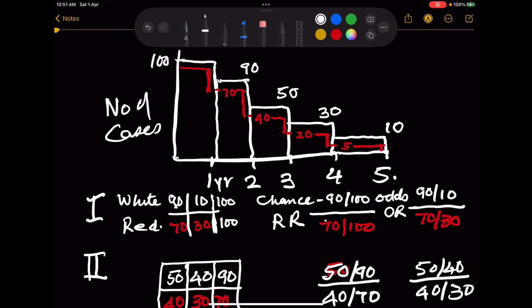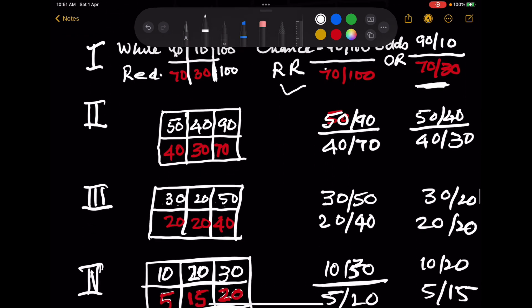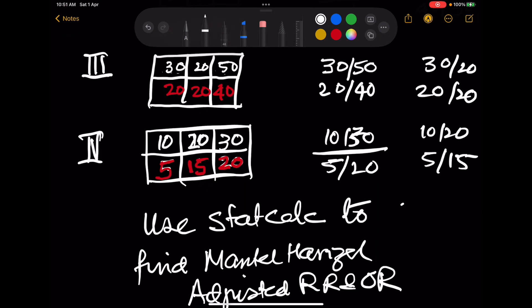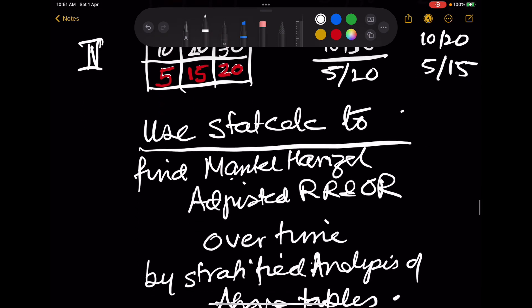And here we will be able to compare the chance of survival in the white group and chance of survival in the red group giving us risk ratio, and odds of survival in the white group and odds of survival in the red group giving us odds ratio. And thus we will have risk ratios and odds ratios over the 5 years, over all the 4 years. And we can use that to find out the Mantel-Haenszel adjusted odds ratios or risk ratios over time, keeping the time constant.